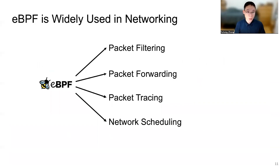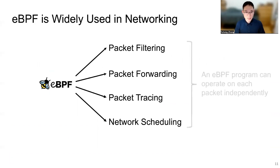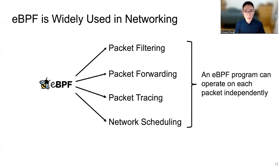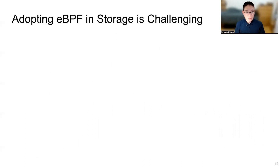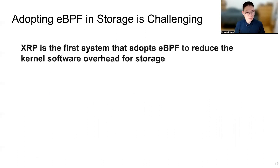eBPF is already widely used in networking — for example, for packet filtering, packet forwarding, packet tracing, and network scheduling. In these networking use cases, an eBPF program can operate on each packet independently. However, a storage eBPF program needs to traverse a large on-disk data structure in a stateful way. This is not an easy problem. XRP is the first system that adopts eBPF to reduce the kernel software overhead for storage.